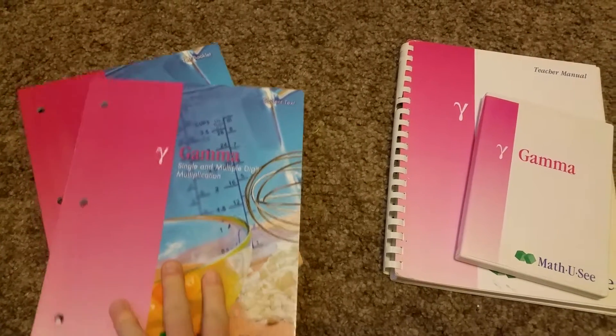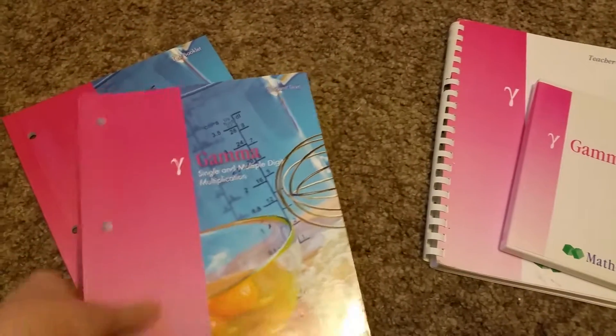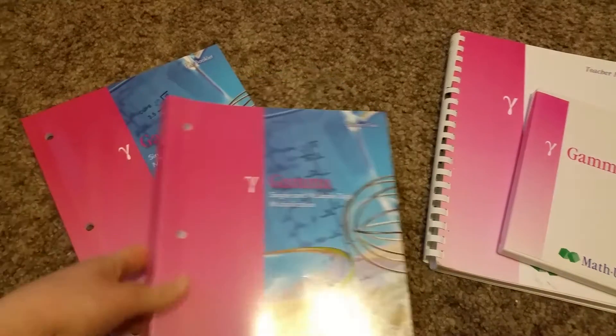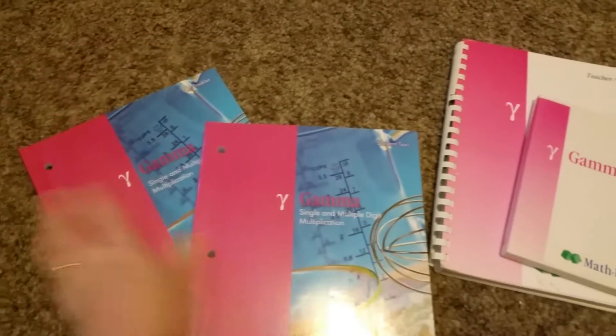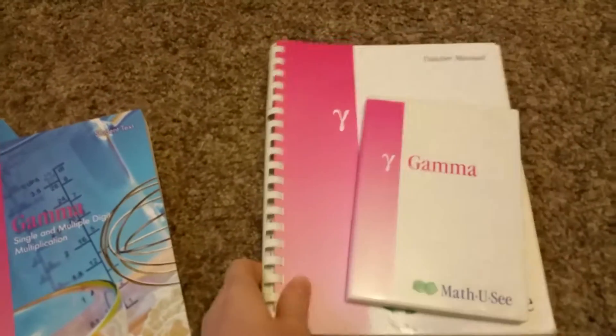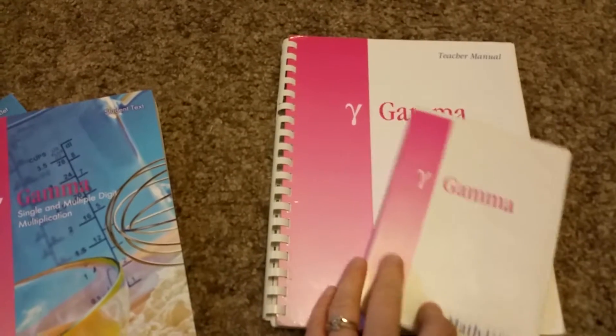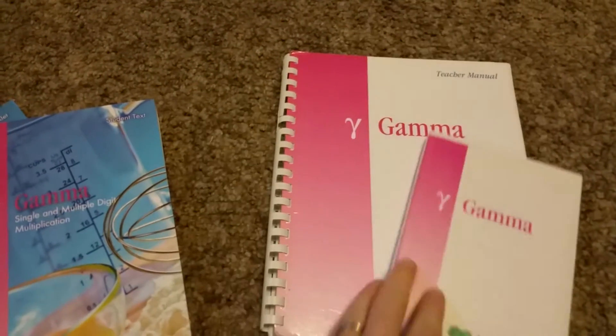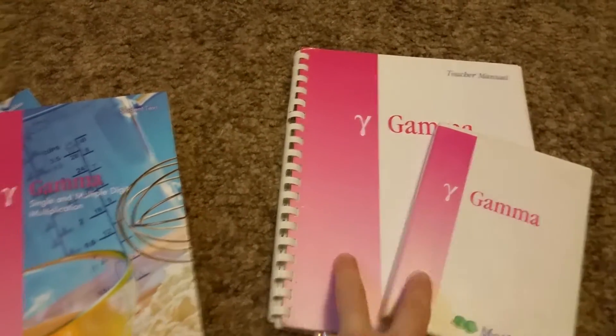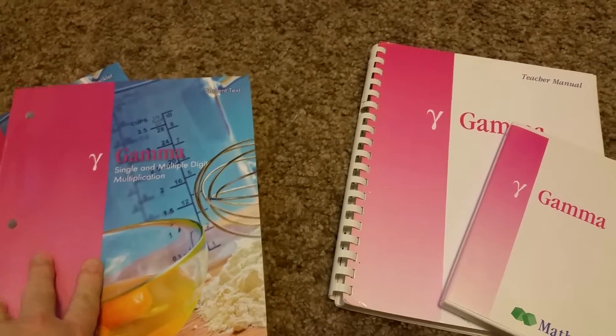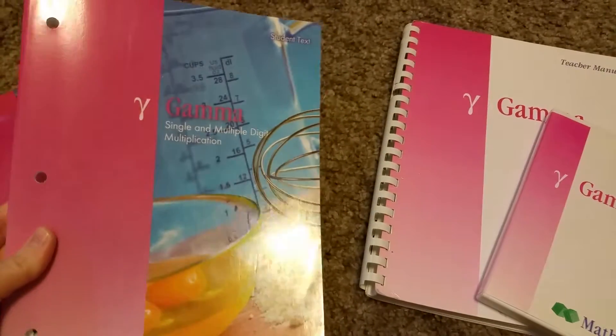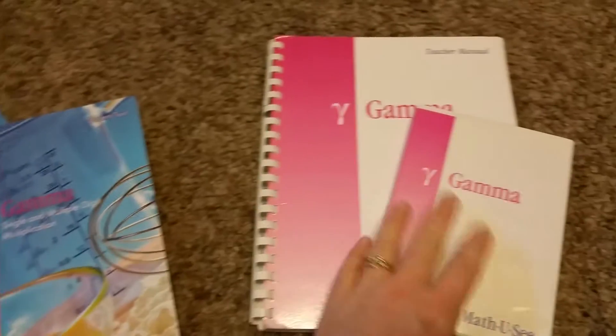Once again, it's the same concept as the other ones. They have a student pack, so it's the student text and then the test booklet. Then they have the teacher pack, which is a teacher manual and the DVD. This one looks different because it's older. I have replaced the student one with the kids so they look cooler.